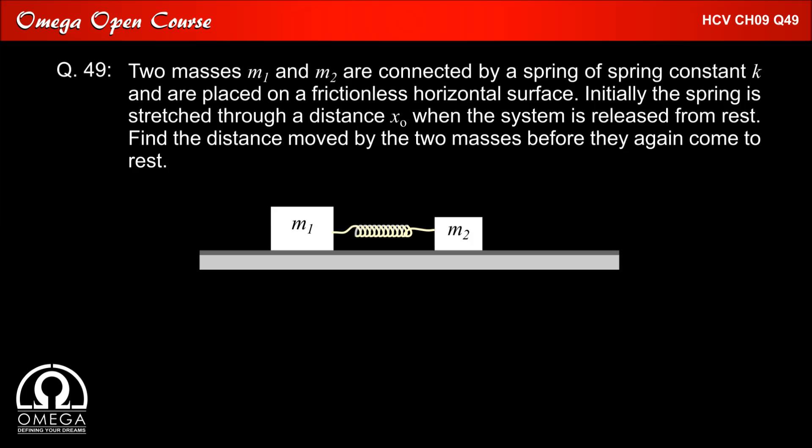Two masses M1 and M2 are connected by a spring of spring constant k and are placed on a frictionless horizontal surface. Initially, the spring is stretched through a distance x0 when the system is released from rest. Find the distance moved by the two masses before they again come to rest.